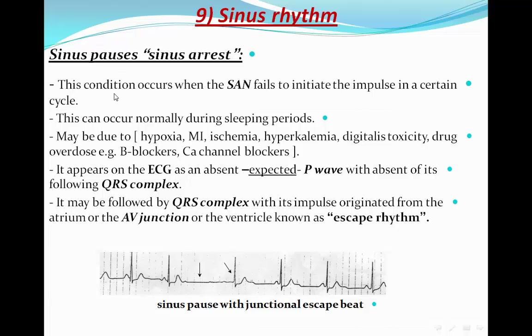The first topic is sinus pause or sinus arrest. This condition occurs when the SA node fails to initiate the impulse in a certain cycle. This can occur normally during sleep periods, but may be due to hypoxia, MI, ischemia, hyperkalemia, digitalis toxicity, or drug overdose — especially of agents like beta blockers or calcium channel blockers.